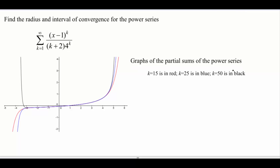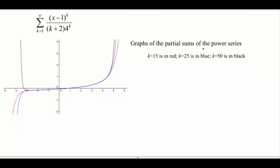On GeoGebra, I graphed our different partial sums for this particular power series. k equals 15 is in red, so that's kind of this outer function down here. k equals 25 here is in blue, kind of has the basic same shape to it but maybe a little bit tighter. And then 50, here in black, looks kind of totally different on one end. So our power series is centered around 1, because we're subtracting a 1 off of that.